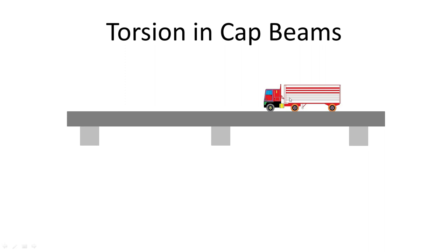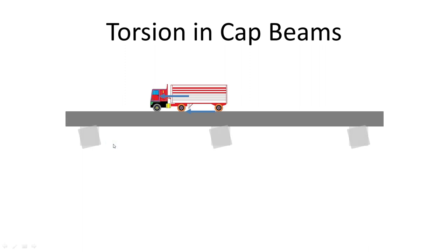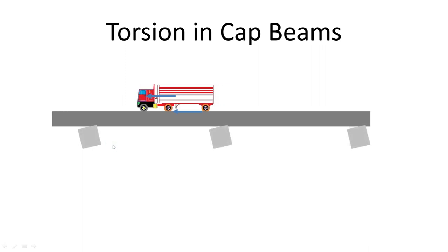A similar mechanism happens on bridges. This slide shows a truck on a bridge deck. As the truck applies brakes, some of its inertial force gets transferred to the deck due to friction between the tires and the deck. The deck then tends to move forward, inducing torsion in the cap beams.